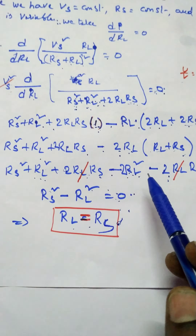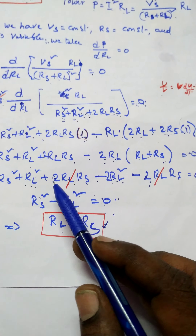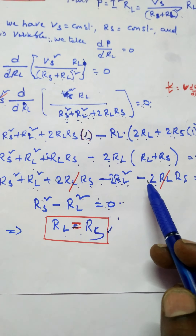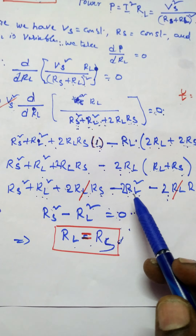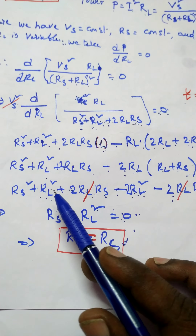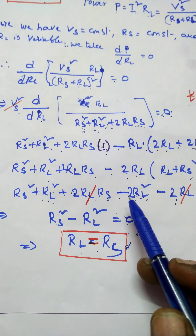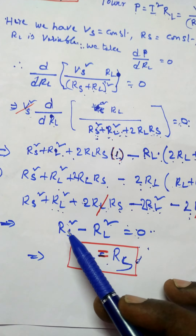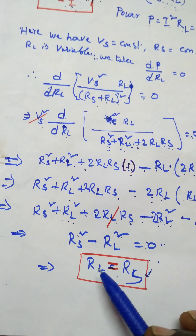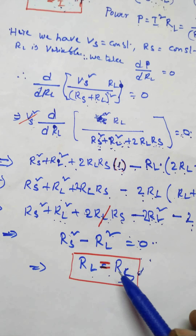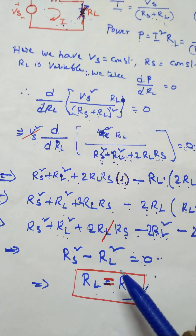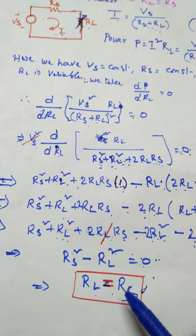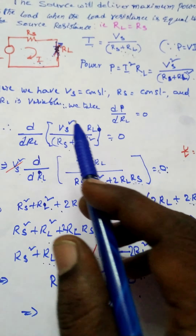In this equation, the plus 2·RL·RS and minus 2·RL·RS terms cancel. We are left with RL squared minus RL squared... wait — RS squared minus RL squared equals zero, giving RS squared equals RL squared, or simply RL equals RS. This means the load resistance equals the source resistance.